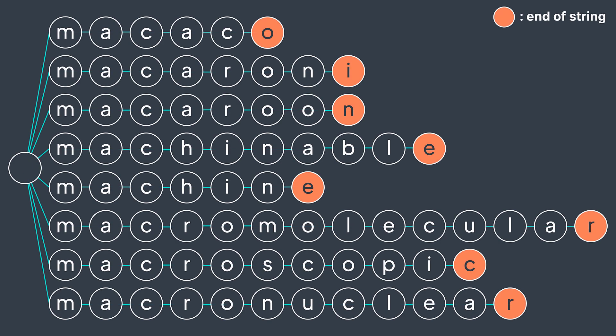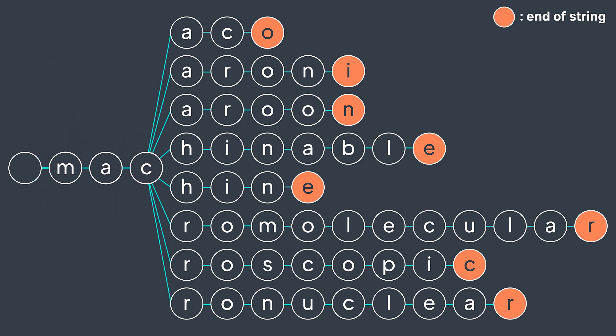Suppose we have a set of strings. If we store them in an array, we would have n times m characters, where n is the number of strings and m is the average length of a string. But we can notice that all of them start with MAC. So instead of storing the characters MAC multiple times, we can store them once and attach to them all the words that start with it.